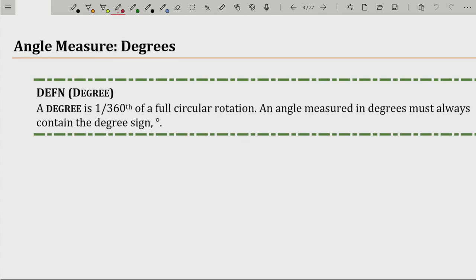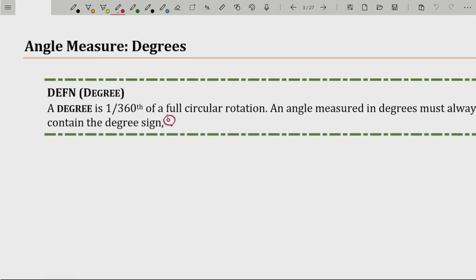A degree is just 1/360th of a full circular rotation. An angle measured in degrees must always contain the sign, that little circle, the degree sign, must always. If you do not have that degree sign on there, you're talking about a different style of angle, and your professor will probably assume that.